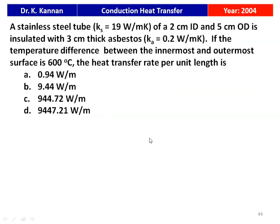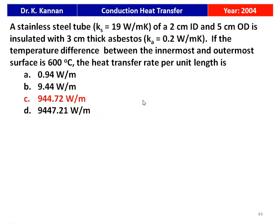The next question is from the 2004 question paper. A stainless steel tube of thermal conductivity 19 W/mK with 2 cm internal and 5 cm outer diameter is insulated with 3 cm thick asbestos of thermal conductivity 0.2 W/mK. The temperature difference between the innermost and outermost surfaces is 600°C. The heat transfer rate per unit length — options: 0.94, 9.44, 944.72, or 9447.21 W/m. The correct answer is 944.72 W/m.